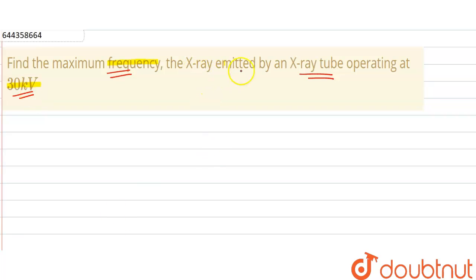We know that the energy of X-ray photons is E = hf. We'll call this equation number 1.